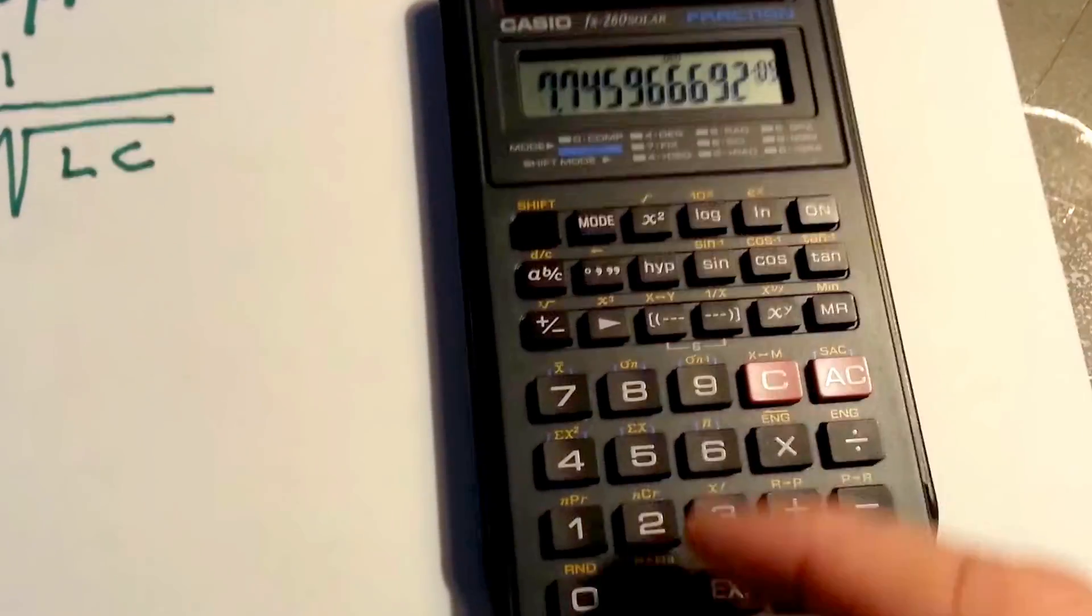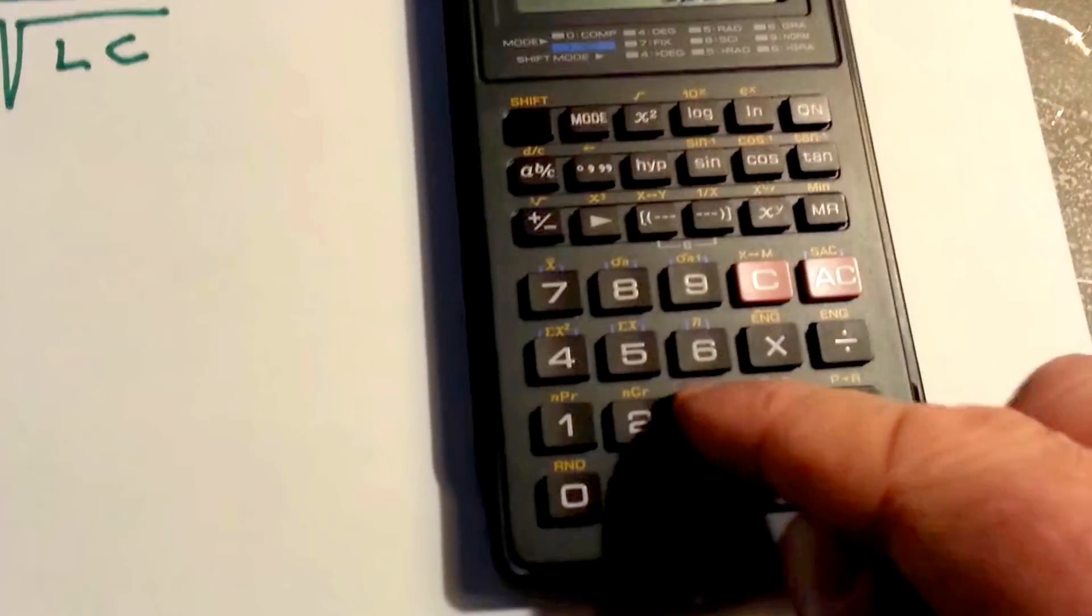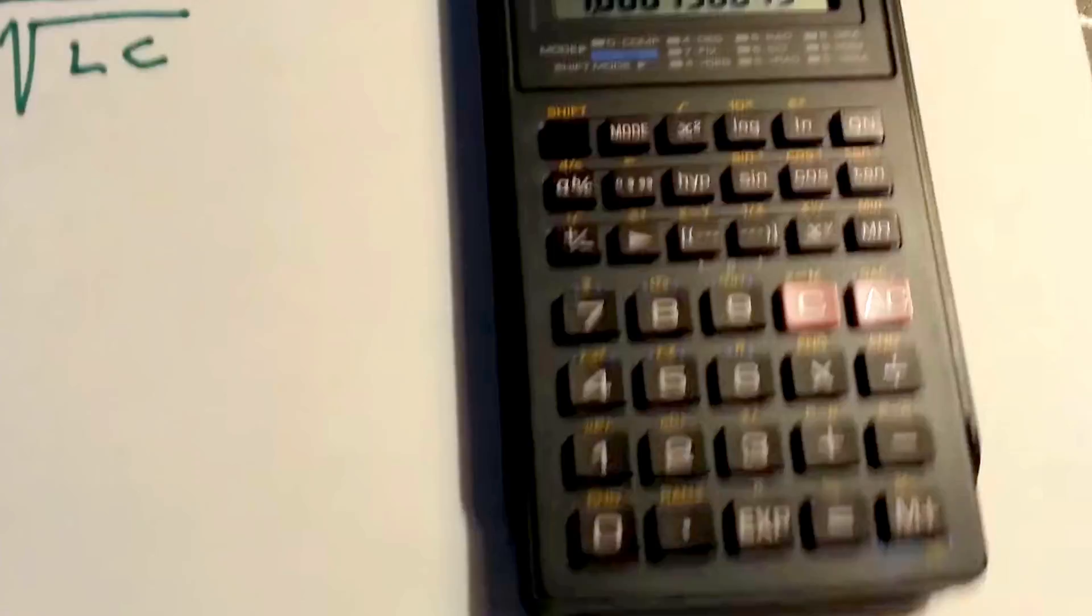So far, so good. Now we've got to multiply by 2 pi, which is 6.283. So times 6.283 equals, we've got that.